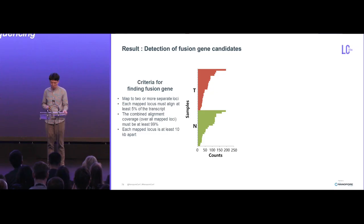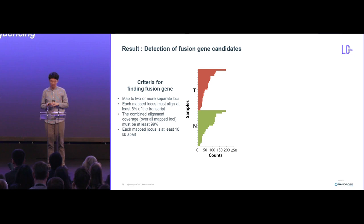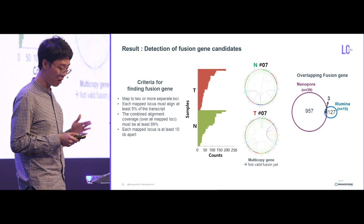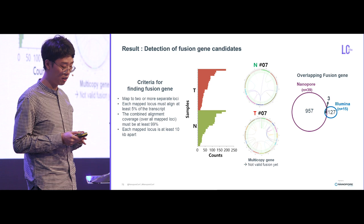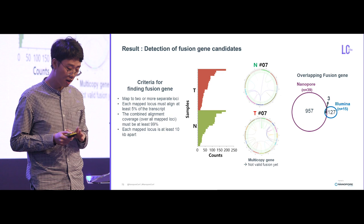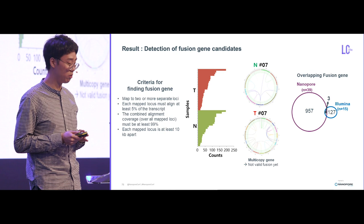Lastly, we attempted to detect fusion genes by implementing the idea of an iso-seq fusion detection algorithm, and the number of fusions from each group is shown here. One paired sample's results are also shown in a circus plot. Although we were able to see some fusion gene candidates, the majority of targets at this point were found to be multi-copy genes, so we want to further validate our targets to be clinically relevant. When we pooled all fusion results from both nanopore and Illumina, the overlap was quite low, meaning there may be fusion genes that can only be found by nanopore sequencing.